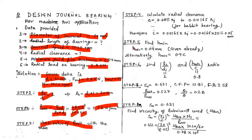Step 5: Find the minimum fluid film thickness h_min. Fortunately, it is given in the problem as 0.04 mm. Otherwise, the formula gives h_min = 0.4 × c = 0.4 × 0.05 = 0.02 mm. Since h_min is already given, we use h_min = 0.04 mm.